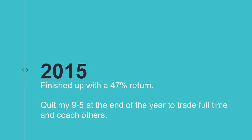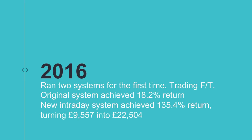In 2016, I decided to run two trading systems for the first time. I had my end-of-day system that I'd been running since 2010, and I decided I wanted to start intraday trading as well. My original daily system achieved an 18.2% return. My intraday system in 2016 achieved a 135% return — I turned £9,557 into £22,504, more than doubling my money. I took my end-of-day trend following philosophy, built a system around that for 10-minute charts, and traded it, and it worked really well.